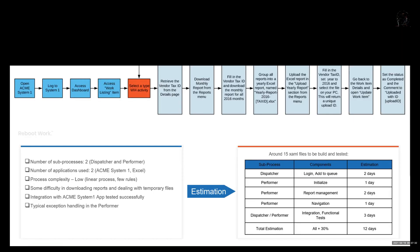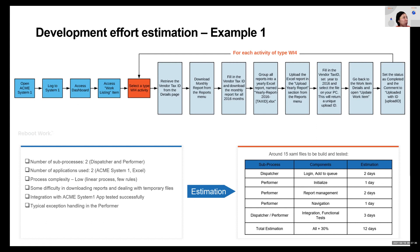We'll go through a couple of estimation exercises today. The first example is for an ACME process that generates a yearly report for vendors, which we automated as part of the RPA Developer Advanced Training. Since we're already somewhat familiar with this process, estimation should be easier. It's a fairly simple, straightforward flowchart. We've decided on a scalable solution using Orchestrator queues, with two sub-processes — Dispatcher and Performer — using ACME System 1 and Excel.